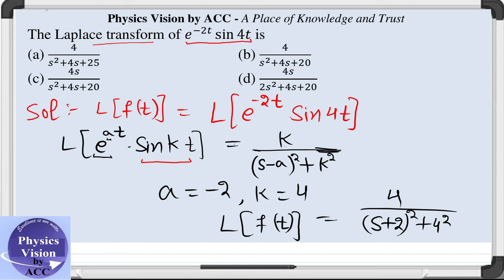Solving for this we get 4 divided by s square plus 4s plus 4 plus 16 is 20, that is option B is the correct answer to this question.